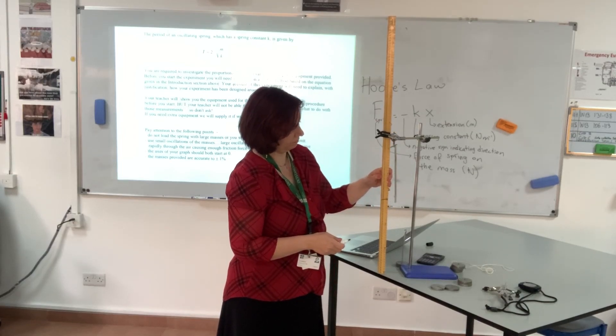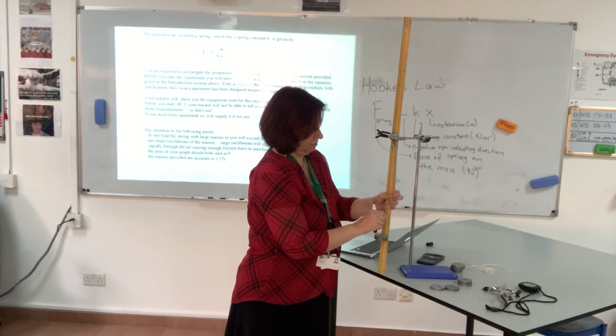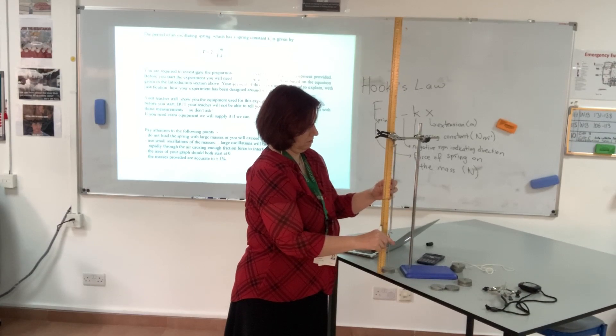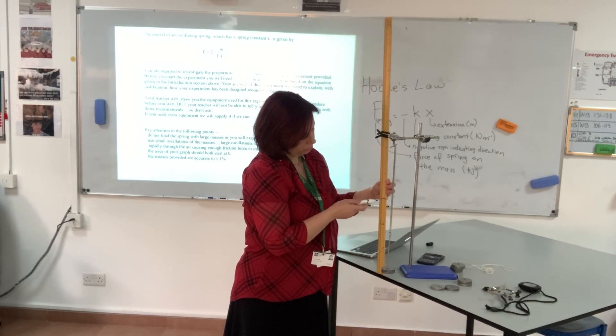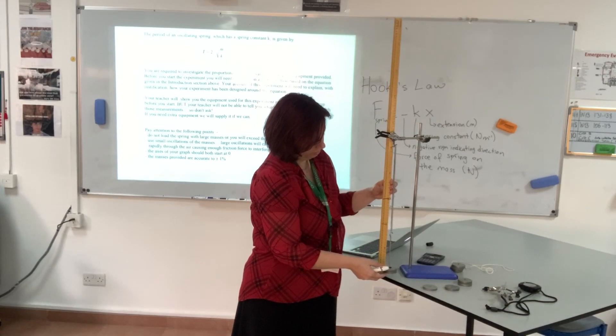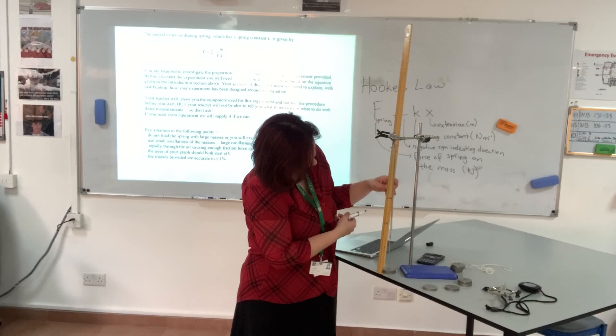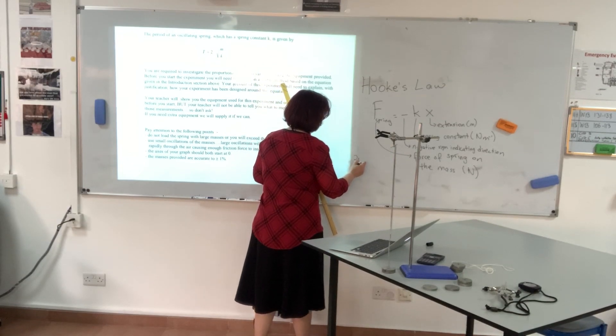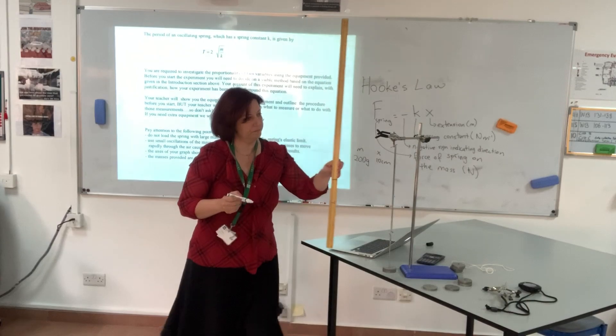And when I hang a mass, it is now roughly here. So the distance from this point to that point is the extension. And if I hang, well this is 200 grams, and the extension would be from 700 millimeters to actually 800 millimeters. So I think I can safely say it's 10 centimeters. So first I used 200 grams mass which caused an extension of 10 centimeters. Keep it there.